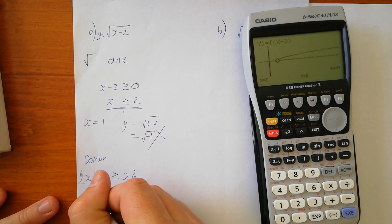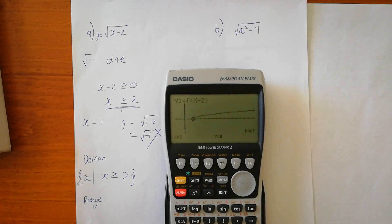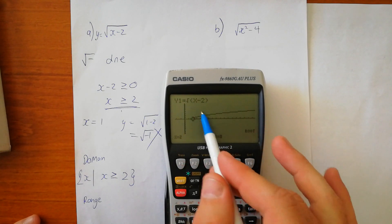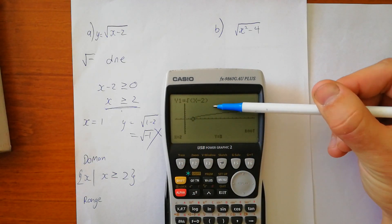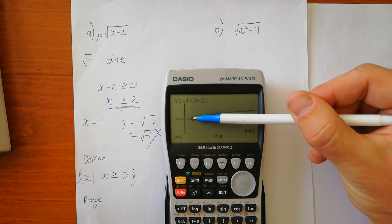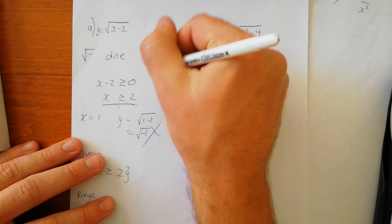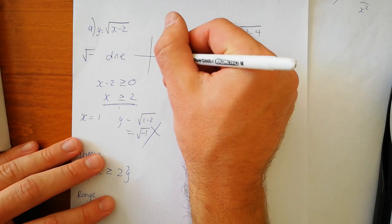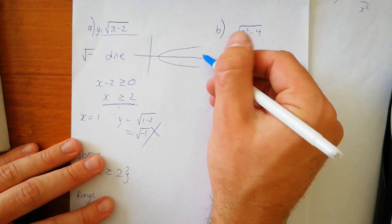For range, this one is a little bit tricky, because our calculator hasn't given us a full representation of what this function actually is. The limitation is that this gives us a function — it doesn't graph the relation. Really, the relationship looks like this: here's minus 2 and it goes at that point. Remember, this is the function.